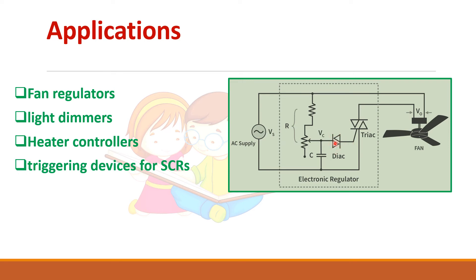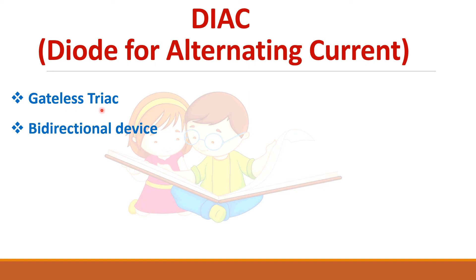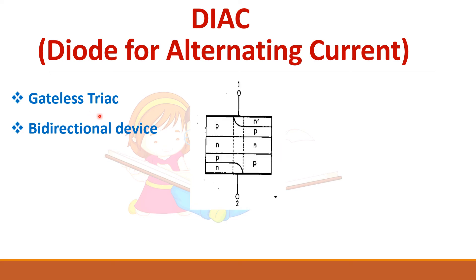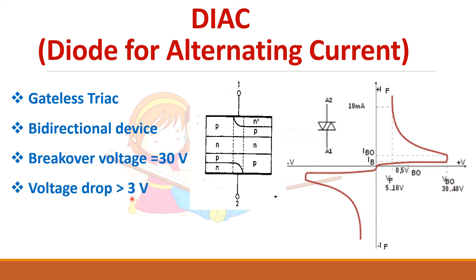DIAC is a bi-directional device. Since TRIAC needs bi-directional gate control, a DIAC is used. DIAC means diode for alternating current. It is also called a gateless TRIAC — a TRIAC without gate control. It is also a bi-directional device and its VI characteristics are similar, except there is no gate. The breakover voltage is around 30 to 40 volts in a DIAC and the voltage drop is around 3 volts. It does not find many applications and is mostly preferred for gate control in TRIAC circuits.